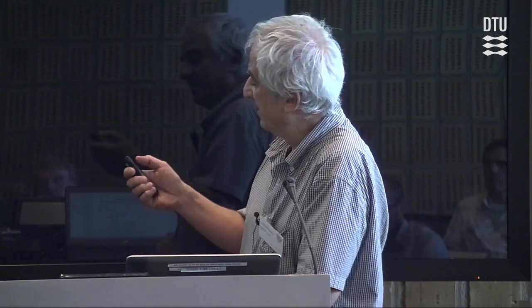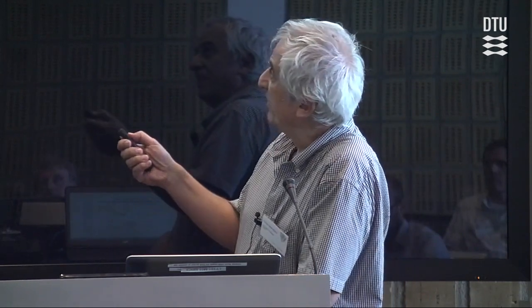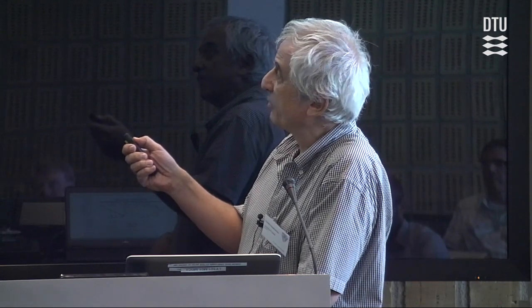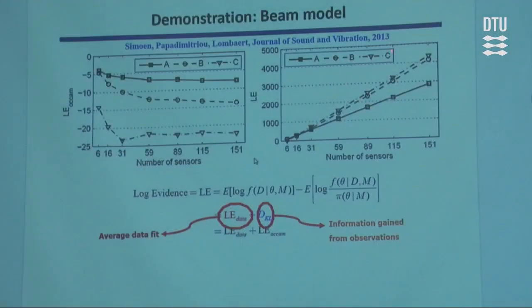Looking at the model evidence, it tells us that the correlated models are much more probable than the uncorrelated one, and the exponentially decaying cosine correlation model wins.